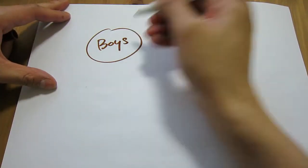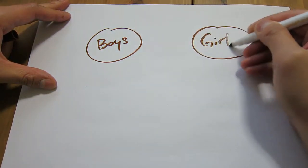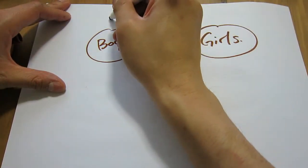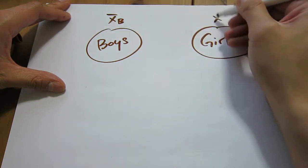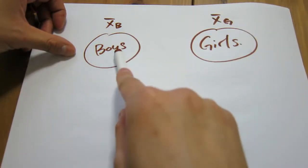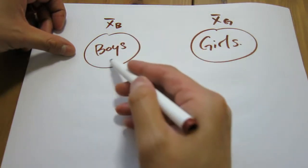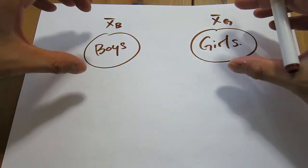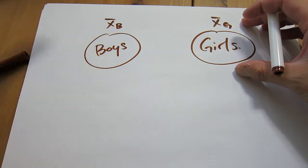What distinguishes a t-test for two independent samples and a t-test for two paired samples? Let's go through a simple example. Suppose we're interested in the average height of boys and the average height of girls. We take a random sample of boys, a random sample of girls, calculate the sample average height for each, and compare them. There's really no relationship between the first sample and the second sample, so this would be a t-test for two independent populations, or two independent samples.